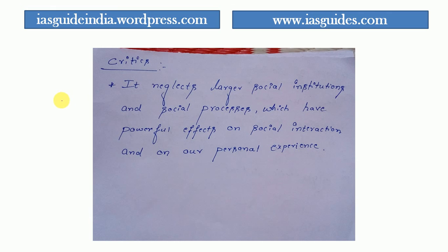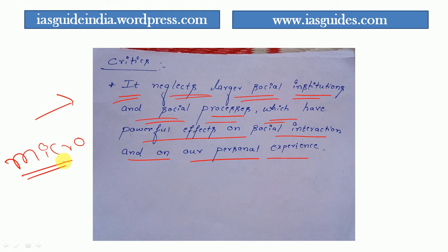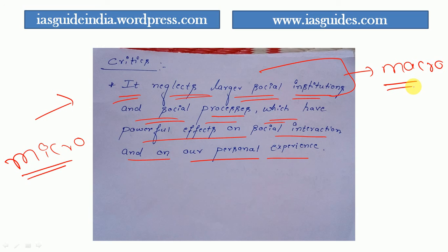The critic of the interaction perspective is that it neglects larger social institutions and social processes which have powerful effects on social interaction and on personal experience. Since it always focuses on the micro level, it neglects macro-level social institutions. That is the limitation of this perspective. This was the end of part three — see you in part four.